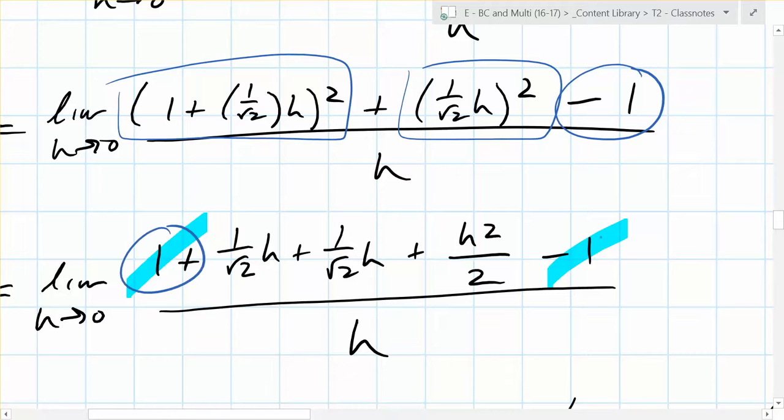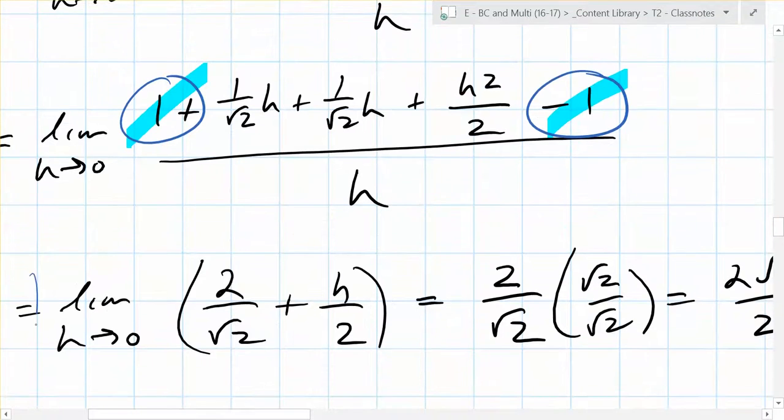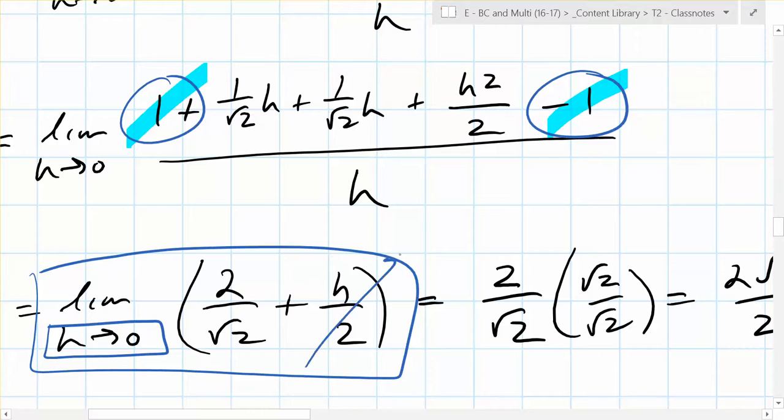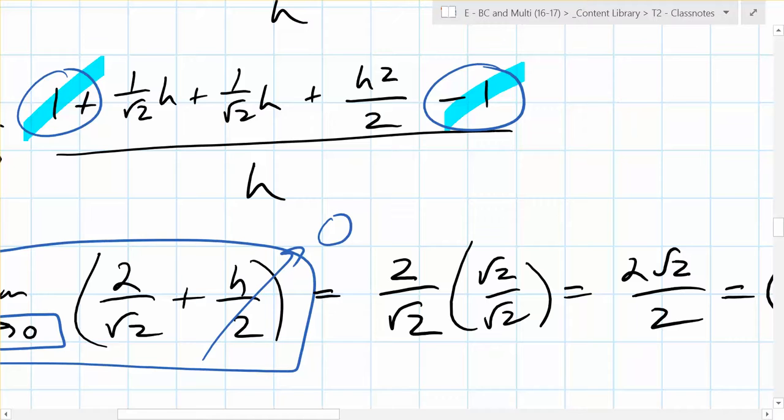Because now you can cancel out the h in the denominator, right? Remember our goal, as stated at the beginning, was we want to get rid of the h. But in order to get rid of the h, we need to make sure all the terms on top have an h in them. What happens once we cancel these terms? All the h's cancel. You're left with this. And now what can you plug in for h? Zero.